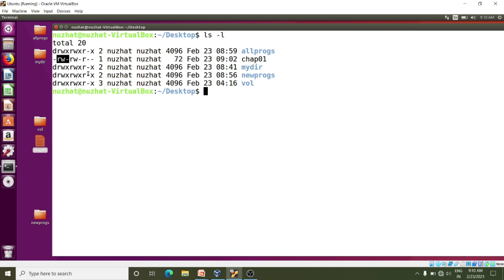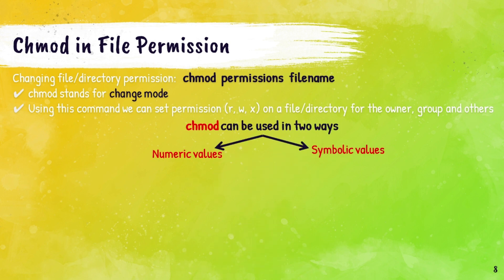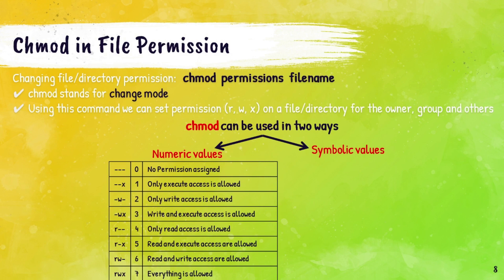To change the permission we can use the chmod command. chmod stands for change mode. The chmod command is used to set permissions — read, write, and execute — on a file or directory for the owner, groups, and others. There are two ways to use the chmod command: first is to use numeric value, and the second is to use symbolic value. In numeric value, the file system is represented as a three-digit octal number system.